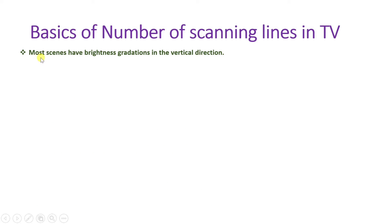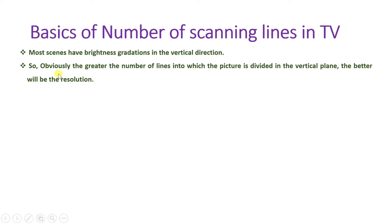Most scenes have brightness gradation in the vertical direction, with less brightness gradation happening in the horizontal direction. It is therefore obvious that the greater the number of lines into which we divide the picture in the vertical plane, the better the resolution will be. As you increase the number of lines, resolution increases.